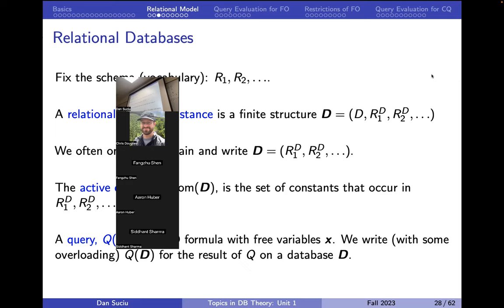You enumerate all the yes answers — all the instances that have a yes answer. You enumerate all the instances that have a no answer, because it's also co-recursively enumerable. And you just wait for your instance to show up in one of these lists. This is how you can decide if your problem is both recursively enumerable and co-recursively enumerable.